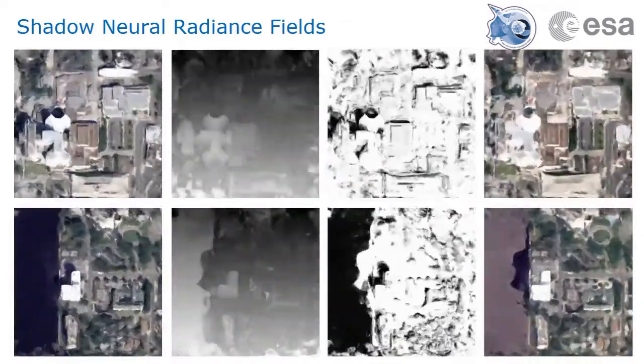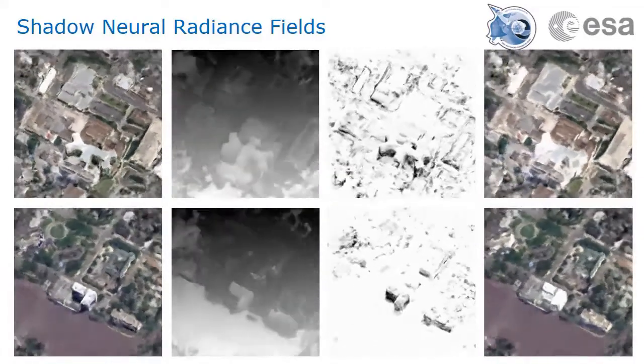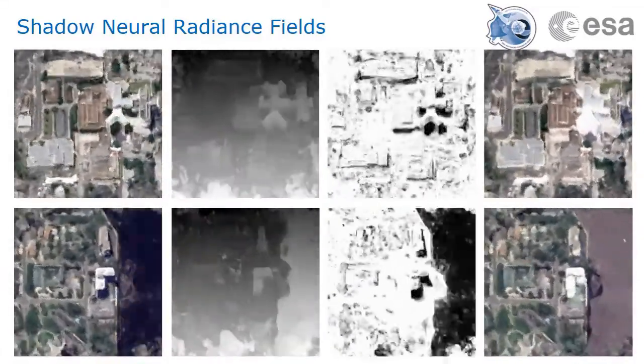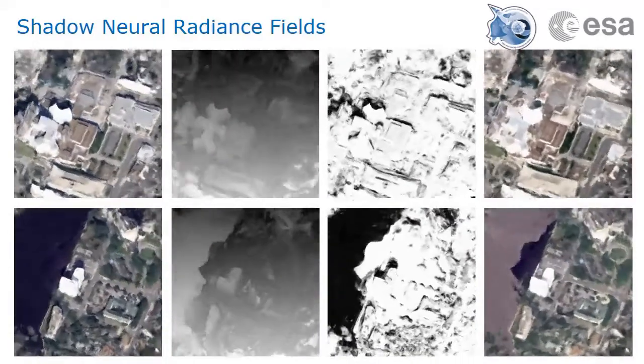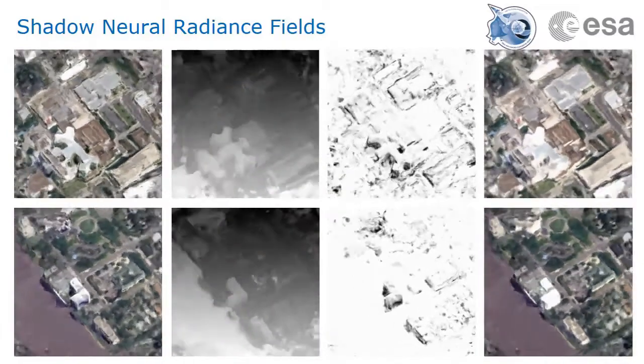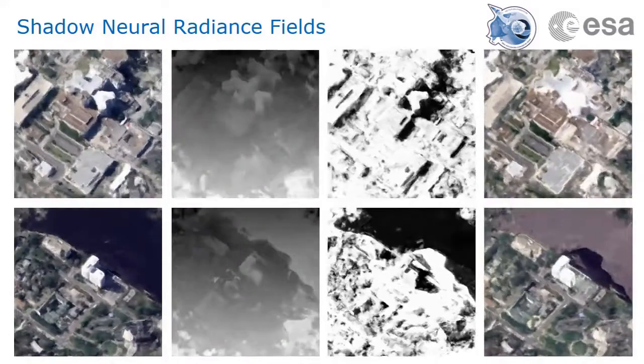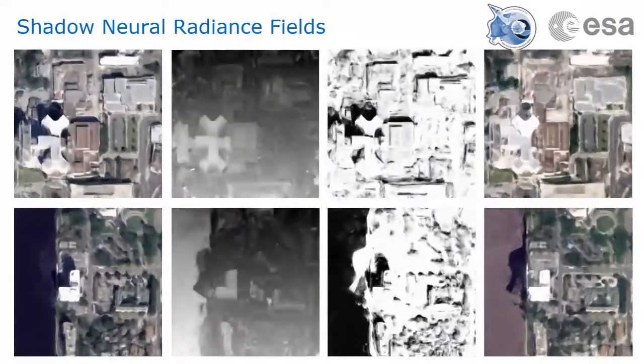Overall, shadow neural radiance fields provide a tool for performing photogrammetry based on any number of satellite images taken in different known lighting conditions. They show success in generating new views in unseen lighting conditions, in roughly estimating the shape of the scene objects, in detecting shadows, and in removing them from the representation.